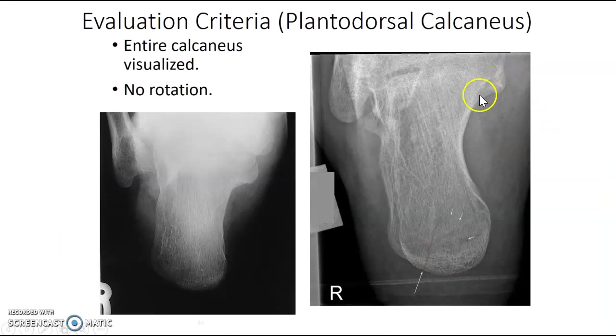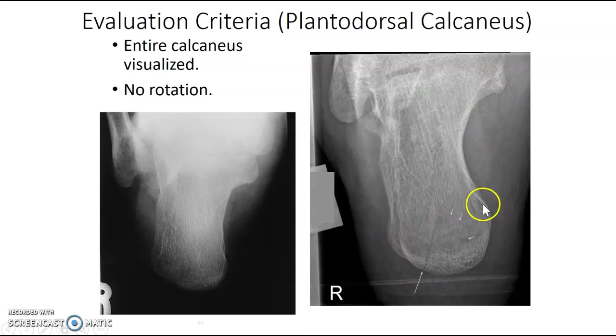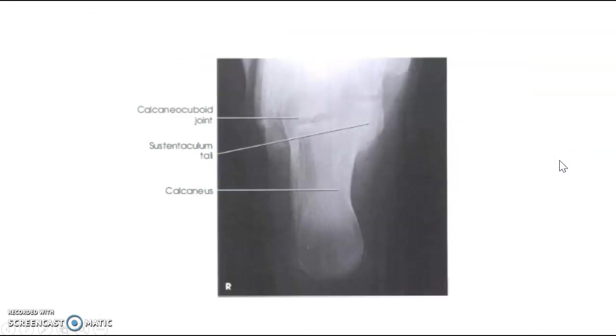This is what the axial calcaneus will ideally look like. There is a fracture visible here. Know your anatomy.